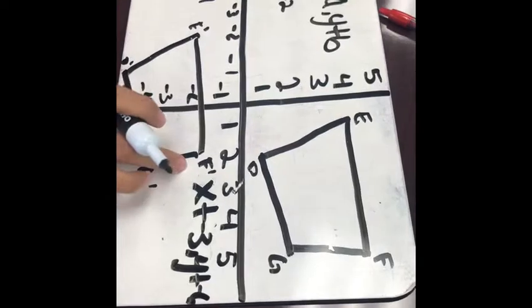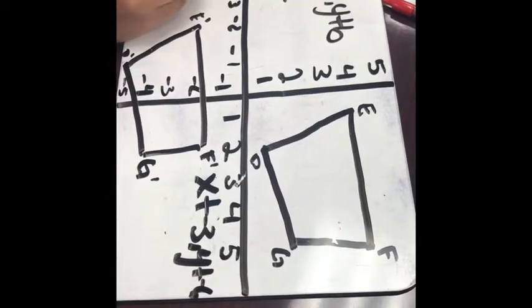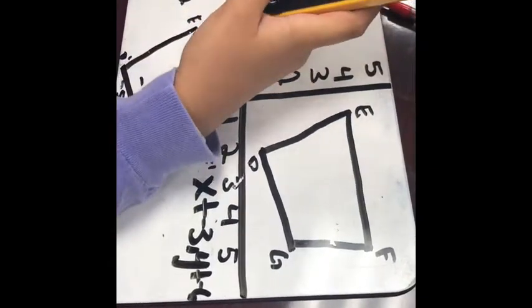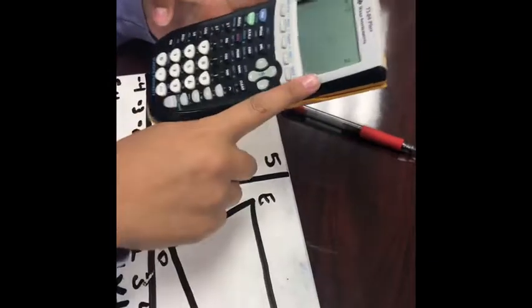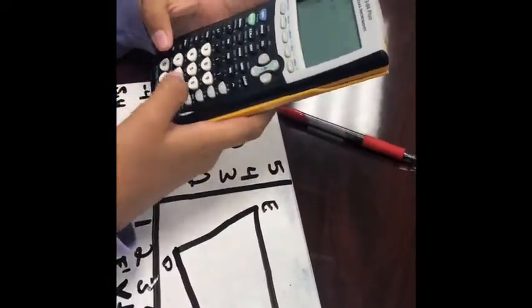And for F1, it would be 2 and negative 2. Let's check this again. So, 5 plus negative 3 equals 2, and 4 plus negative 6 equals negative 2.